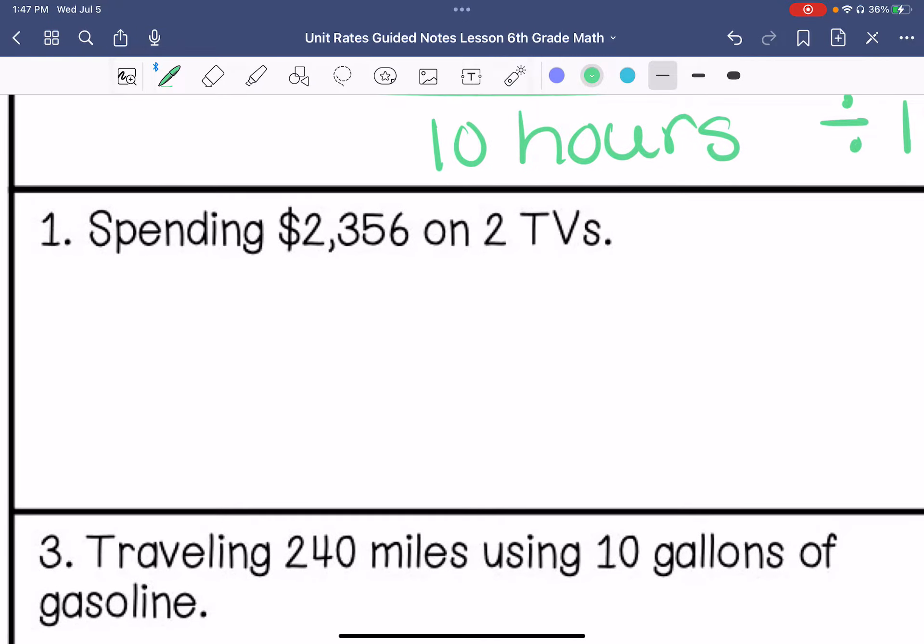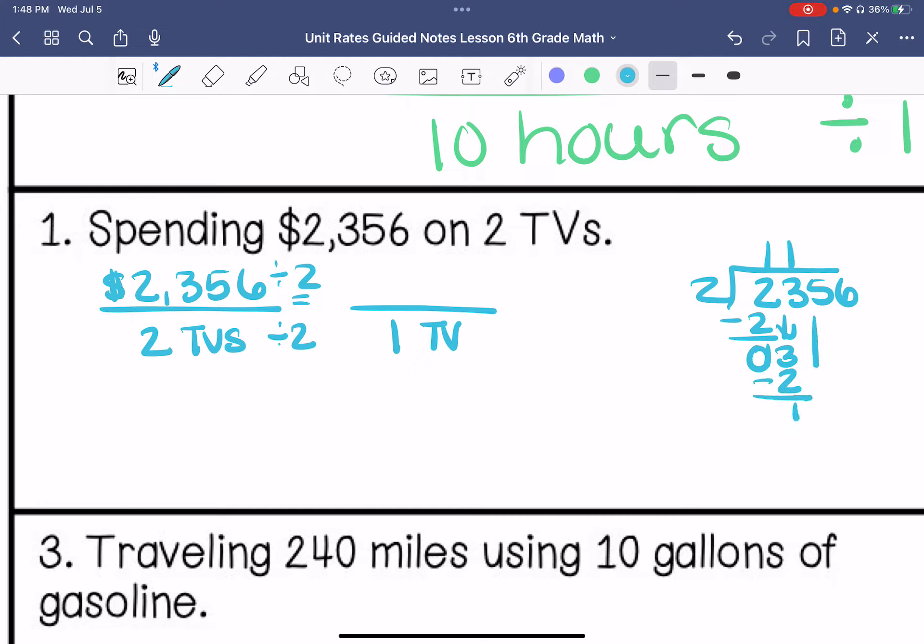Alright, so we're going to write the unit rate for spending $2,356 on two TVs. We're going to figure out how much it costs for one, or per TV. So I would divide it by two. So that would be one TV. Two, let's do the division over here. Two goes into two once.